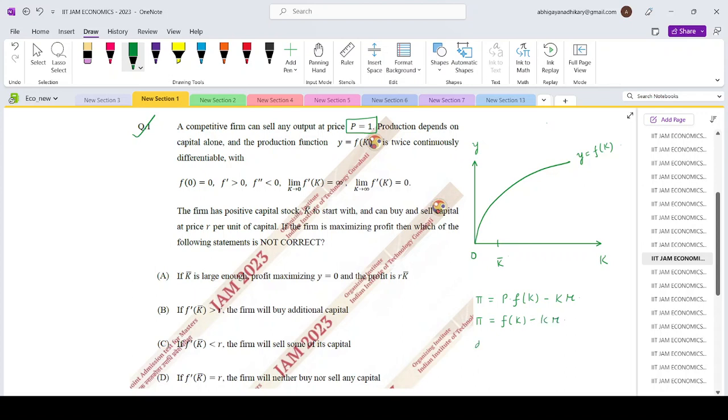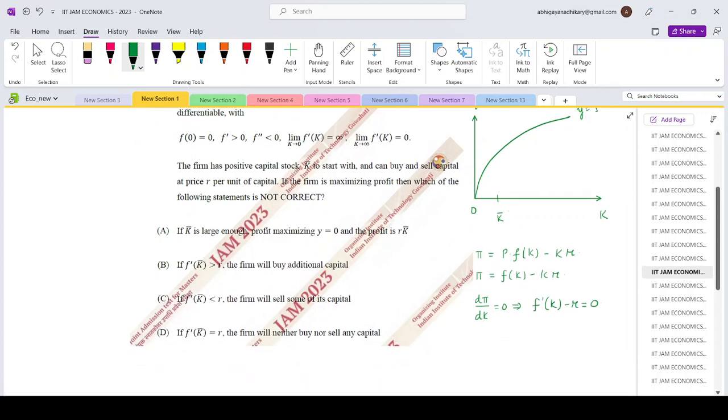So for maximizing profit it will do d pi by dK equals 0. So at the optimum we will have F prime K minus R equals 0, or F prime K equals R.